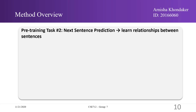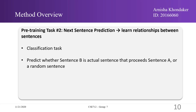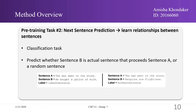The second task in pre-training is Next Sentence Prediction. Many important downstream tasks such as question answering and natural language inference are based on understanding the relationship between two sentences, which is not directly captured by language modeling. To learn the relationship between sentences, the authors trained on a simple binary task: given two sentences A and B, is B the actual next sentence after A, or just a random sentence from the corpus? For example, if sentence A is 'the man went to the store' and sentence B is 'he bought a gallon of milk', the label is IsNextSentence. If sentence B is 'penguins are flightless', the label is NotNextSentence.